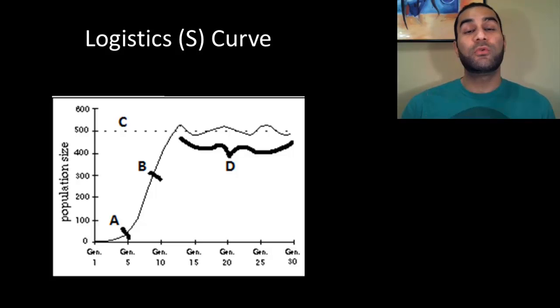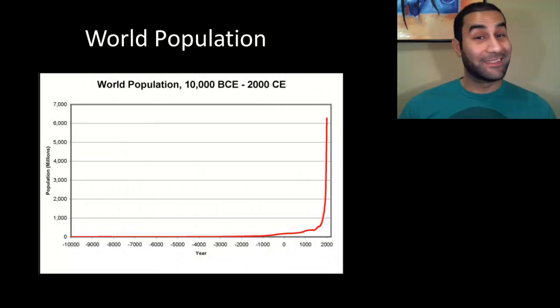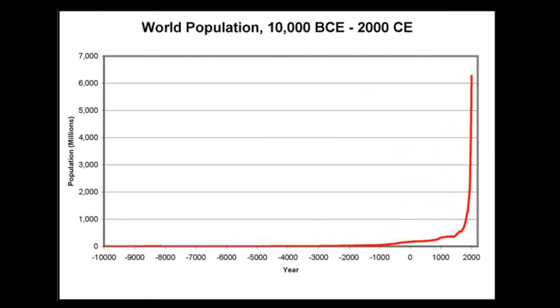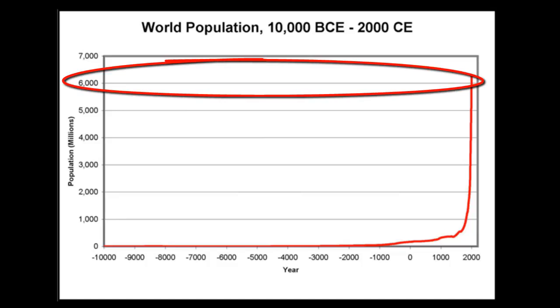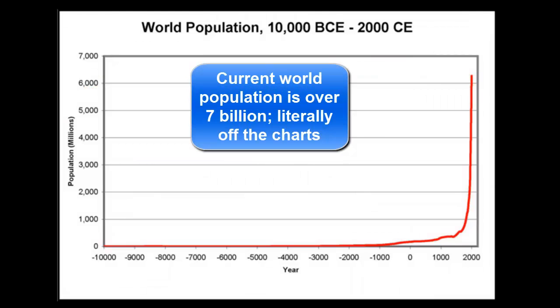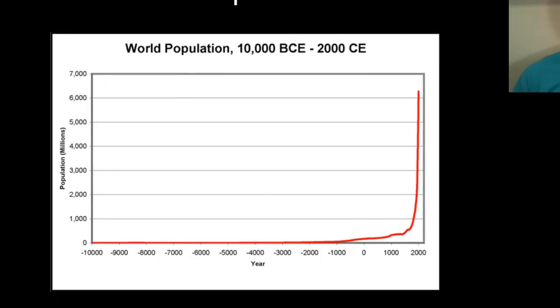The human population is very clearly in one of these two curves — and it's actually a very clear J curve. Looking at population from about 10,000 B.C. up until current day, the graph peaks around the year 2000 at over 6 billion. Right now it's at a little higher than 7 billion. You can see that growth is continuing to skyrocket — this is a very clear J curve.